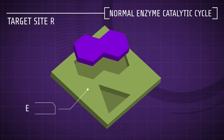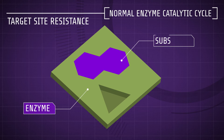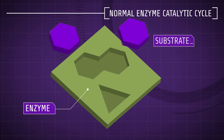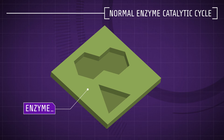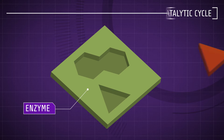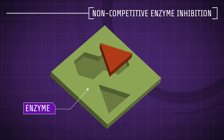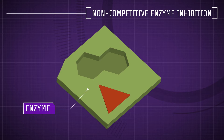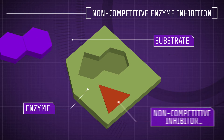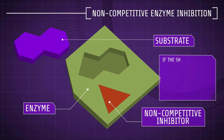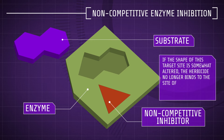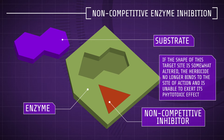Target site resistance. A herbicide has a particular target site of action. If the shape of this target site is somewhat altered, the herbicide no longer binds to the site of action and is unable to exert its phytotoxic effect.